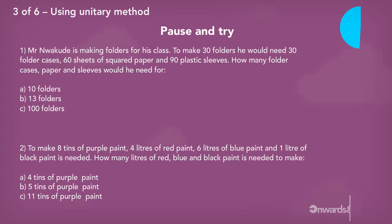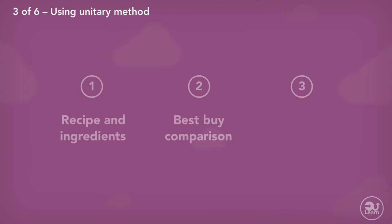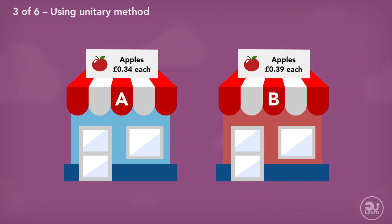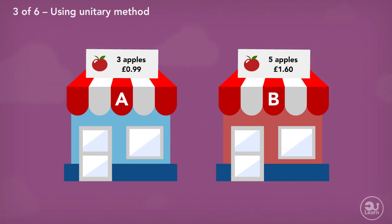Pause the video and have a go at these questions. Another type of question is the comparison of proportion to find the best buy. For example, in shop A, an apple costs 34 pence. In shop B, the same apple costs 39 pence. Which shop has a better value for money? It would be shop A, as one apple is cheaper. What if both shops had a deal where 3 apples in shop A costs 99 pence, and in shop B, 5 apples costs £1.60? Which shop has the better value for money?